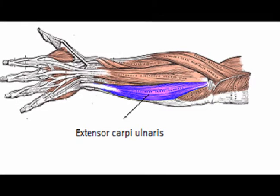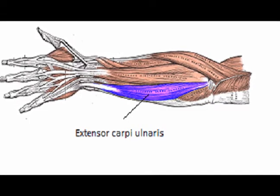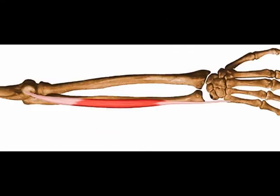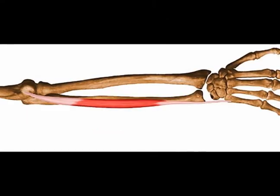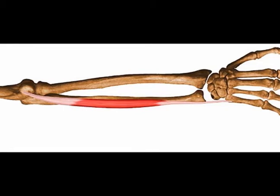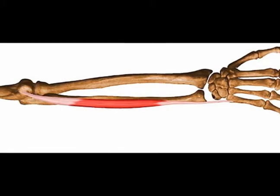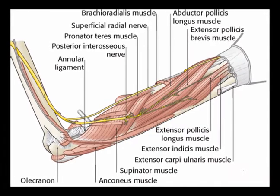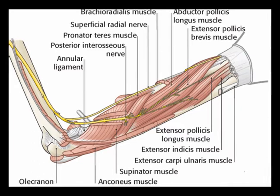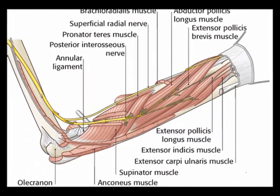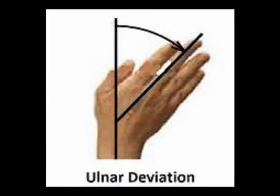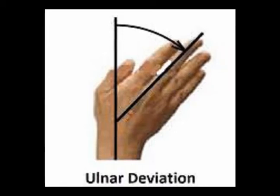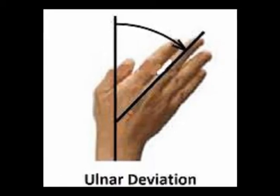The extensor carpi ulnaris is often abbreviated to the ECU. It is classified as a posterior forearm muscle in the superficial group. It originates on the lateral epicondyle of the humerus and the posterior ulna, and inserts into the fifth metacarpal base. Its innervation is the posterior interosseous nerve from vertebral levels C7 and C8. The concentric actions of the extensor carpi ulnaris muscle are wrist extension and ulnar deviation.